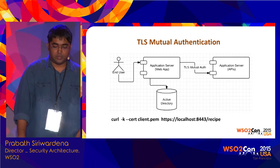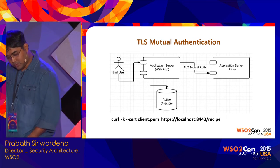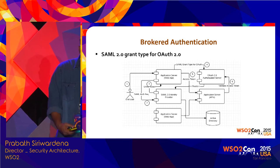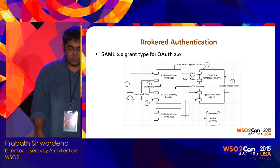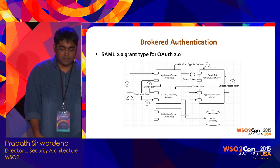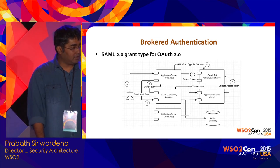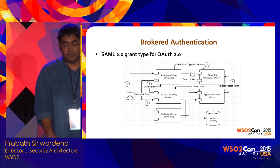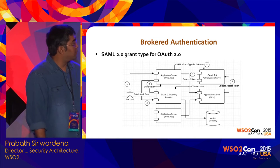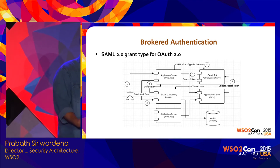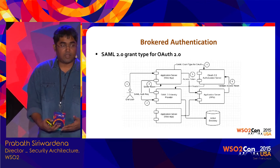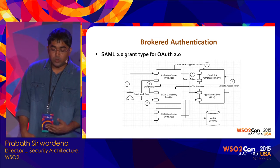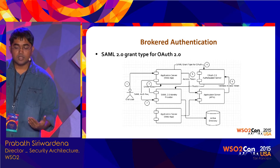Now, brokered authentication. You have a web app — the end user first logs into the web app. This web app is configured to talk to an IDP or a SAML identity provider to facilitate single sign-on. The user will be redirected to the SAML 2 identity provider, then prompted to authenticate. If not already authenticated, the user provides credentials. The IDP then issues a SAML token — that is step two.